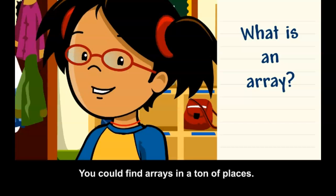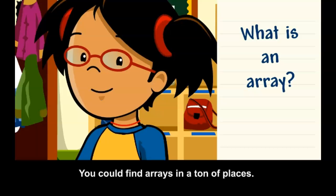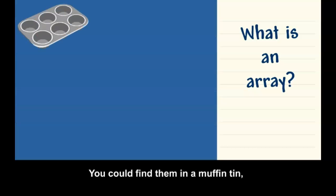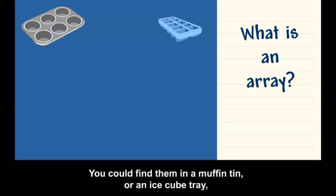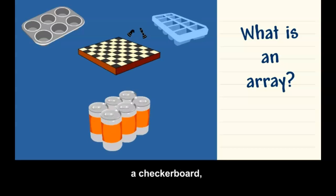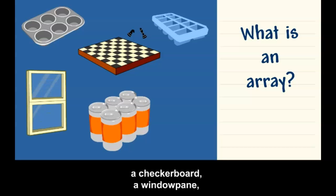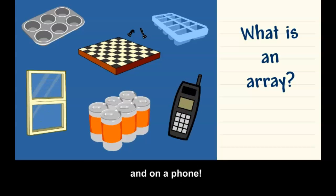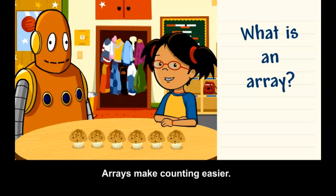You can find arrays in a ton of places. You could find them in a muffin tin, or an ice cube tray, a pack of soda, a checkerboard, a windowpane, and on a phone. Arrays make counting easier.